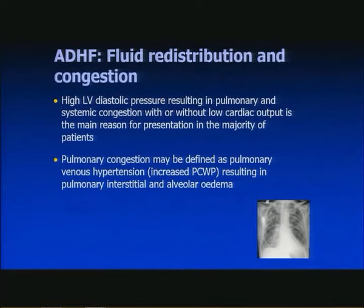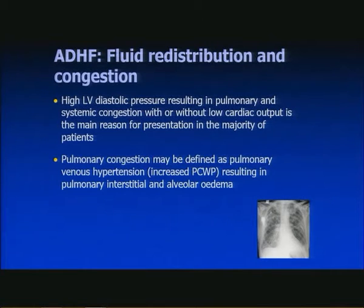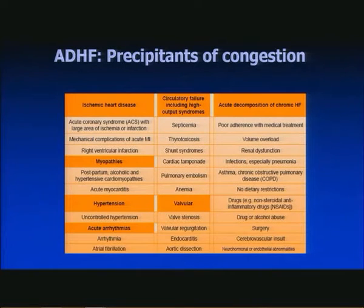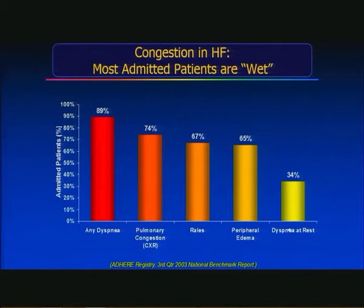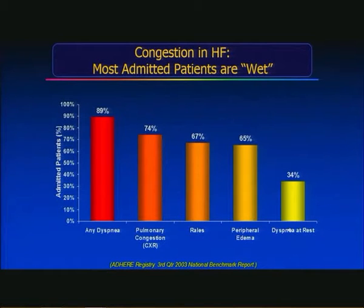Looking at fluid redistribution and congestion: high LV diastolic pressure resulting in pulmonary and systemic congestion, with or without low cardiac output, is the main reason for presentation in the majority of patients. Pulmonary congestion is defined as pulmonary venous hypertension with increased PCWP, resulting in pulmonary interstitial and alveolar oedema. From the ADHERE registry, dyspnea is present in 90% of patients, with pulmonary congestion, rales, and peripheral oedema as predominant features.